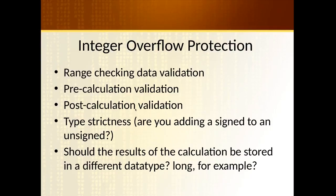There are a number of ways to avoid integer overflows. We can do range checking during data validation — even if we're using an unsigned int, we probably know we're never going to get close to the upper bound, so we can check how many values we'll actually be using. We can also do pre and post calculation validation — sanity checks on the data. For example, if I add a large positive number to a large positive number, the result should be strictly greater than either one of them. If we're multiplying two positive numbers, we should never get a negative number.